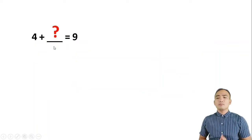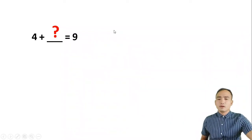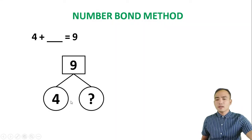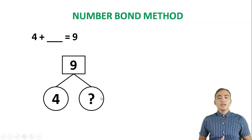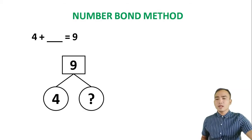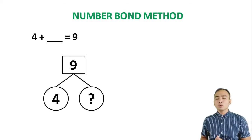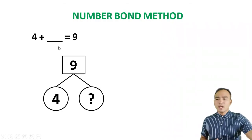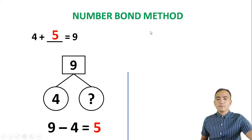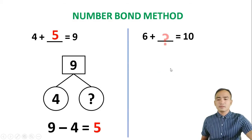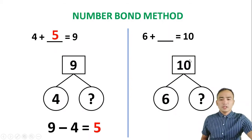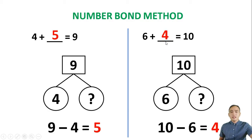What should be the number on the blank to make the number sentence true? We are going to use the number bond method. So we have 9, and 4, and then the missing number. To find the missing number that we add to 4 to get 9, we use the inverse operation: 9 minus 4 is 5. Therefore, the missing number is 5. Another example: 6 plus blank is 10. To find the missing number, we use the inverse operation: 10 minus 6 is 4. The answer is 4.